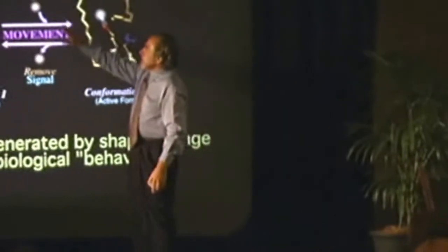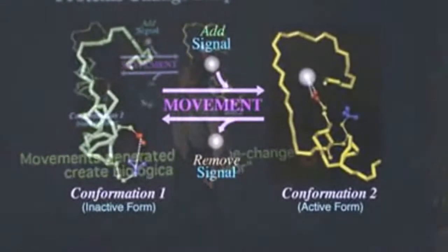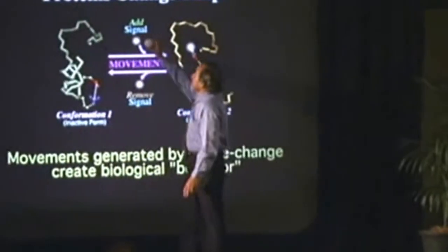This is interesting because this is right out of the science journal. This backbone here, this protein in green, is the same one that's in yellow. In this case, this is a protein that causes muscle contraction in your body and it depends on this signal.